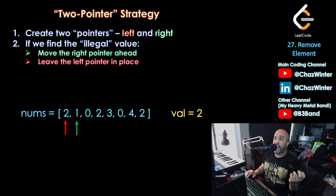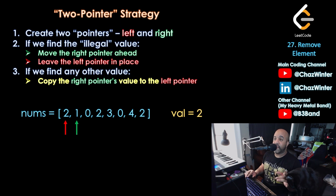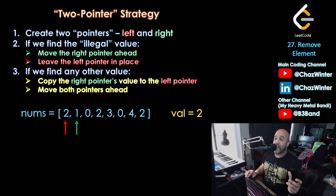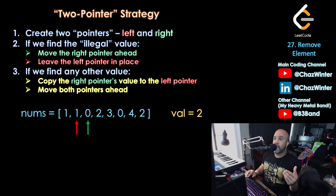So now the right pointer has moved ahead. What happens when the right pointer sees any other value — something that's not a 2? If it sees any other value, we're going to copy the right pointer's value to the left pointer, and then move both pointers ahead. Once we successfully write a value with the left pointer, it shouldn't stay there because it might copy more values to that same position. And we don't want to keep reading the same value, so both pointers move ahead in this case.